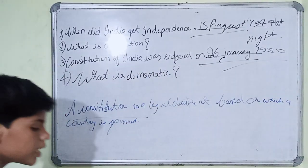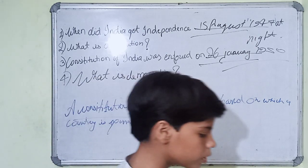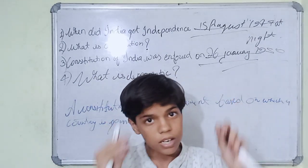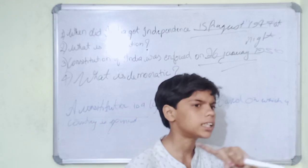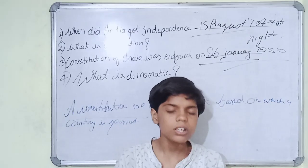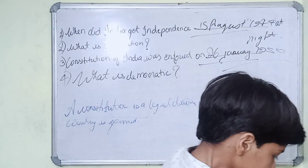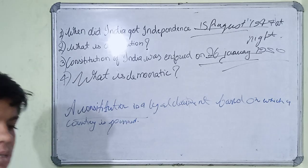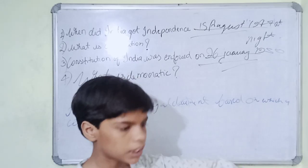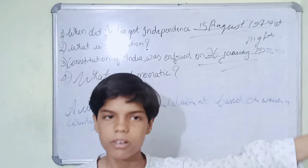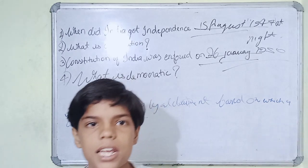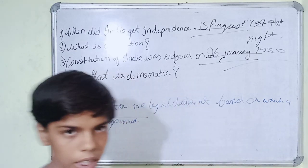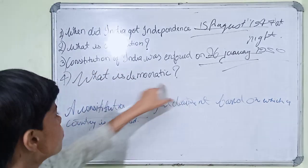What is democracy? Democracy is the government elected by the people.